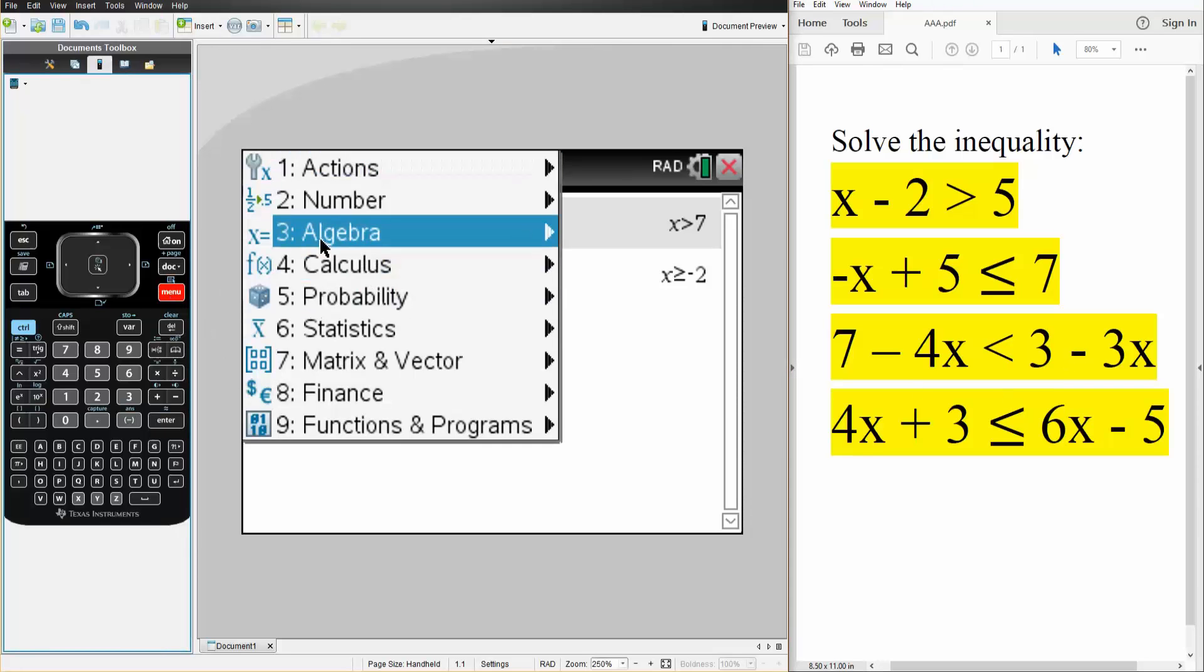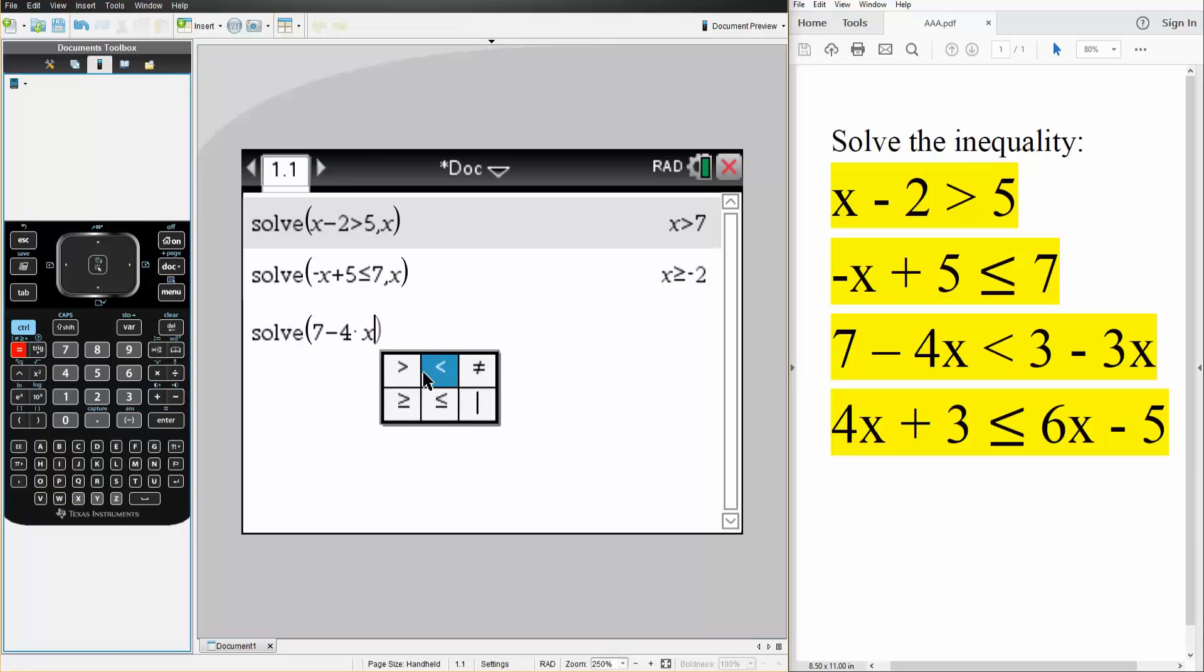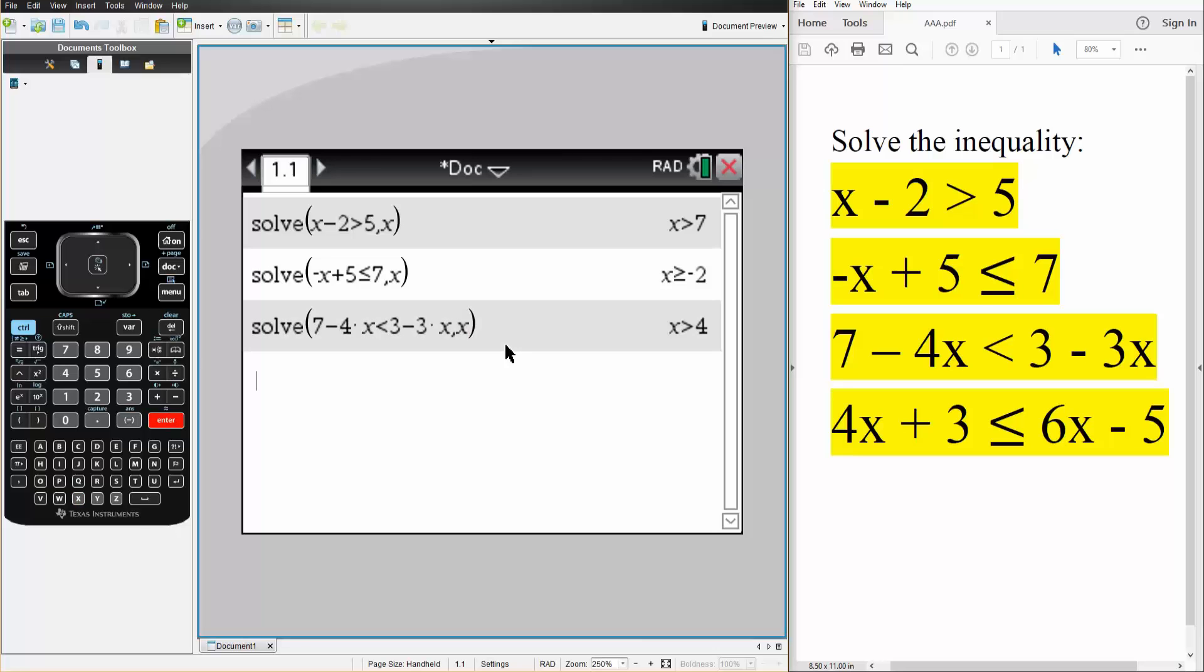So menu, algebra, solve. And so we plug in 7 minus 4 times x is less than, so ctrl, equal. We have a less than 3 minus 3 times x, comma x. We were solving for x. We hit enter. And it's saying that x is greater than 4.